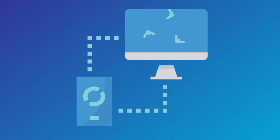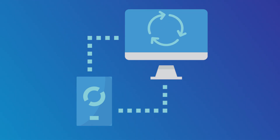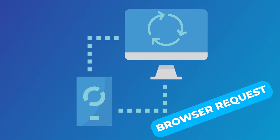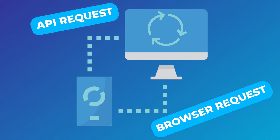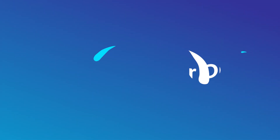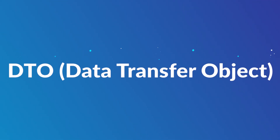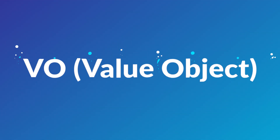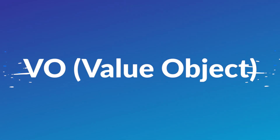When working on an application we often need to transfer data from point A to point B. Point A and B can be many things — it can be a browser request, an API request, and so on. How to structure and model this data is what we'll be learning in this lesson and the next one. We'll talk about DTOs, which stands for data transfer objects, and in the next lesson we'll talk about VOs, which stands for value objects.